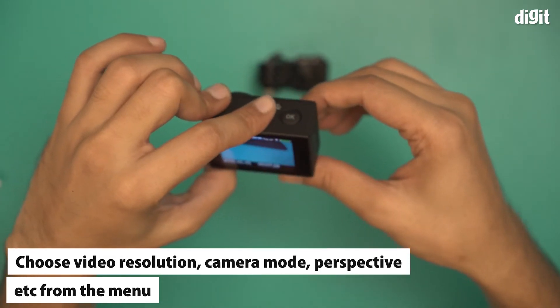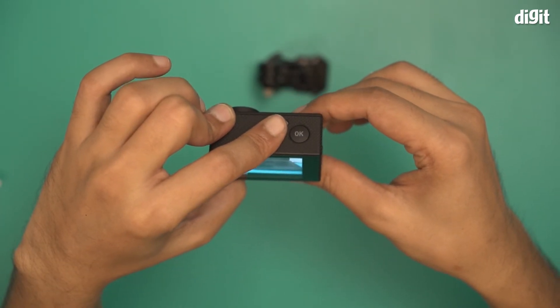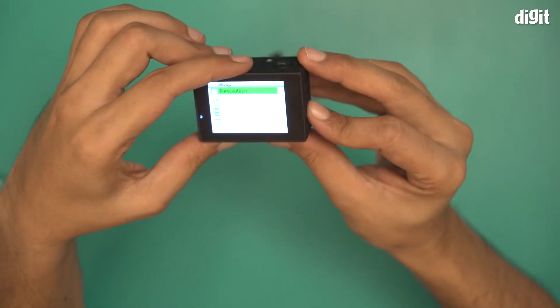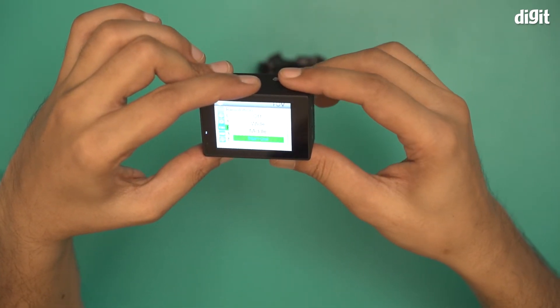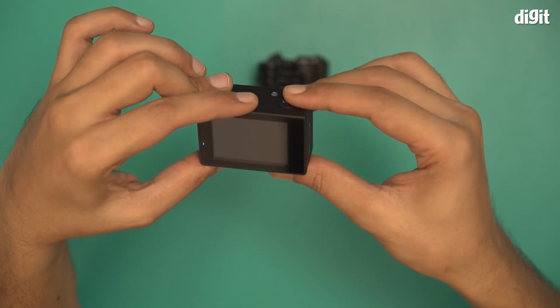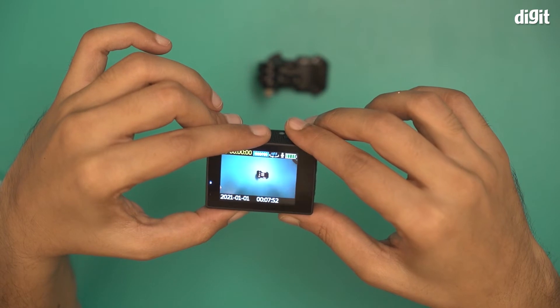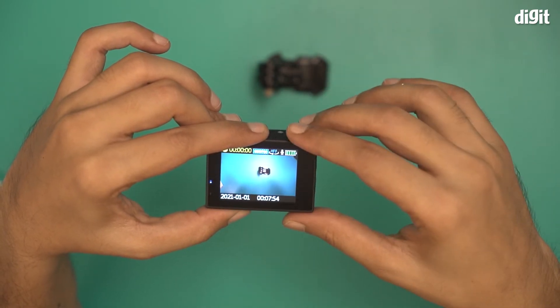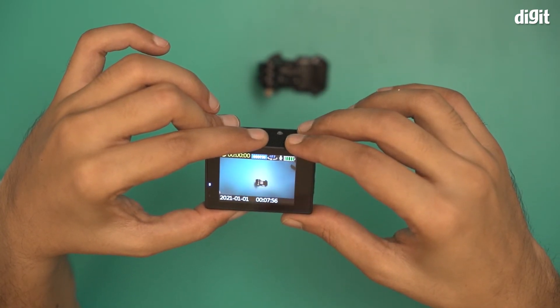I'm going to change the perspective again to wide. I go back to FOV, click OK, click on wide, and go back to the camera. As you can see, it's much wider now. That's how you change the FOV of this particular camera.